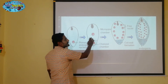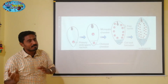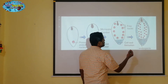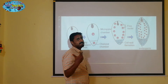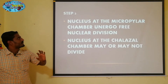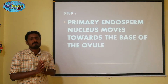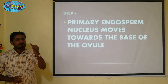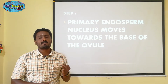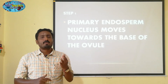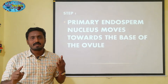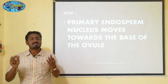There is a nuclear division in the micropylar chamber. In this endosperm there are 3 steps: first, the primary endosperm nucleus moves to the base cell region; second, two cells form — one micropylar chamber and one chalazal chamber; third, nuclear division occurs in the micropylar chamber while the chalazal chamber may or may not divide.